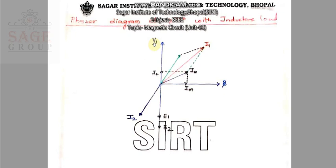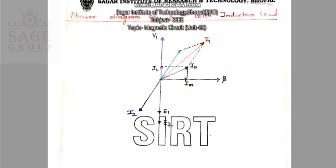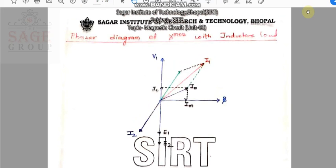In the no-load condition, I0 is the current that flows in the core, which is responsible for core losses. Core losses have two components: magnetizing current and core current. So one current is the core current I0 and the other is I2 dash. If we find the resultant of these two, we get I1. So I1 is the primary current, and it divides mainly into two parts: first is the core current, and second is the load current. So I1 supplies both the core current and the load current.